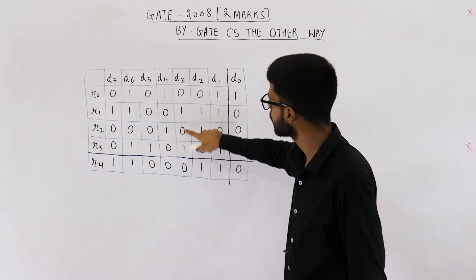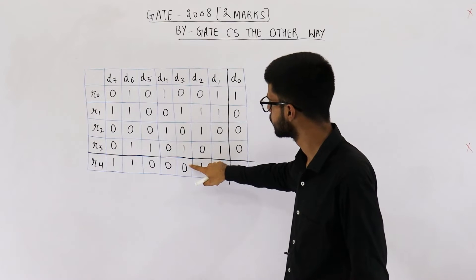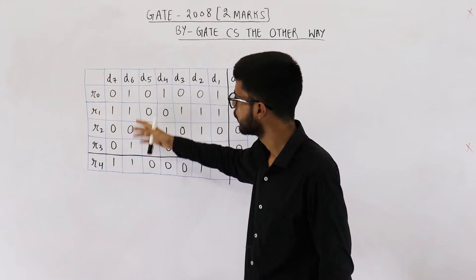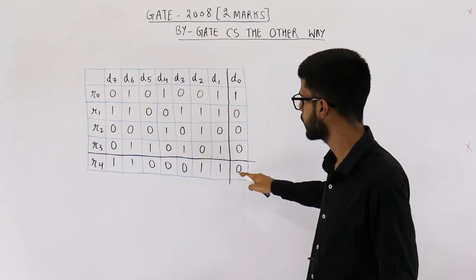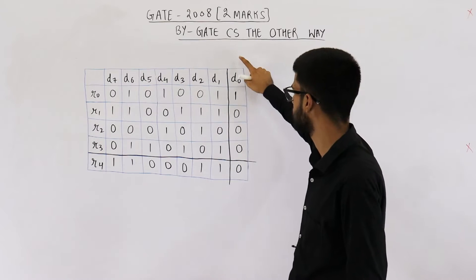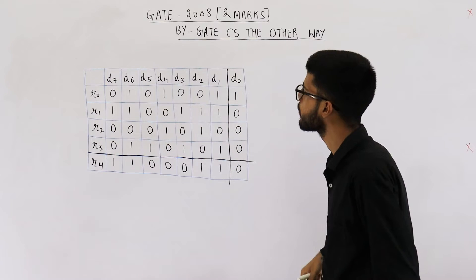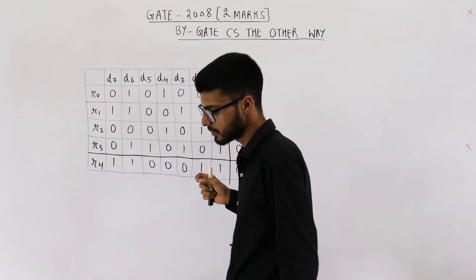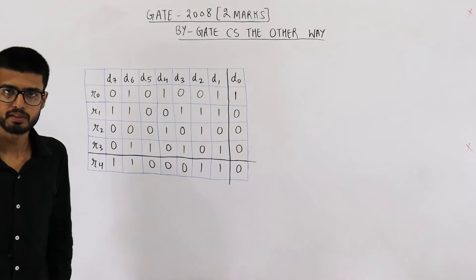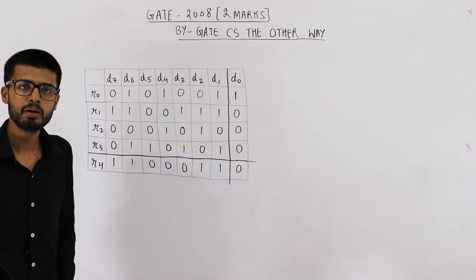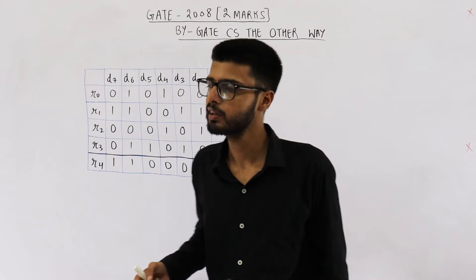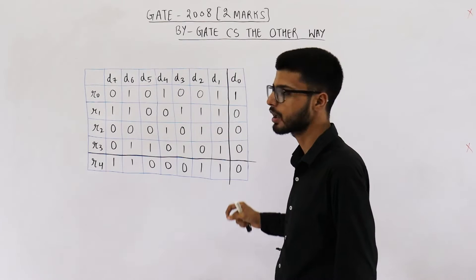So the parity of D3 is 0 and similarly the parity of D6 is 1. The column-wise parity is written in this row and the row-wise parity is written in this last column. They are saying if some receiver gets this data, what is the minimum number of bits that have an error? What is the minimum number of bits that are corrupted?